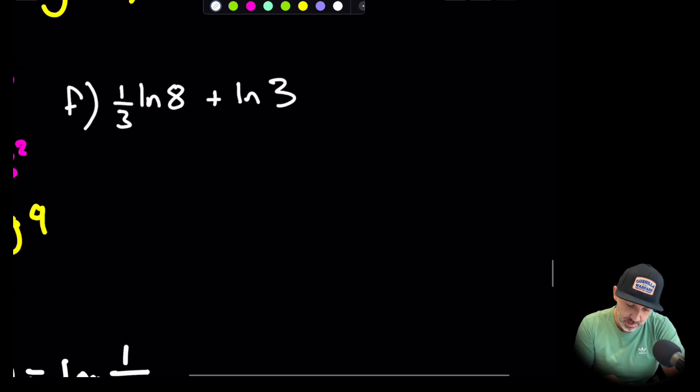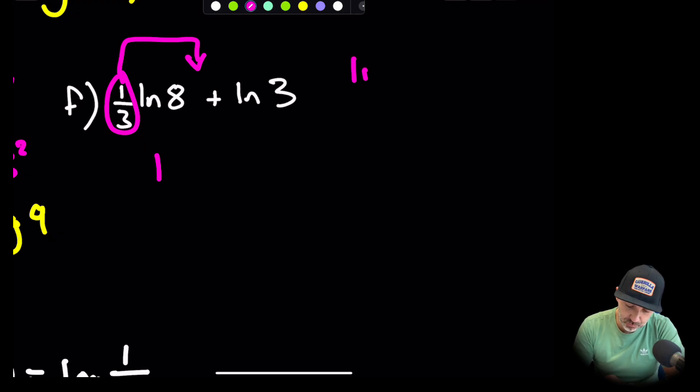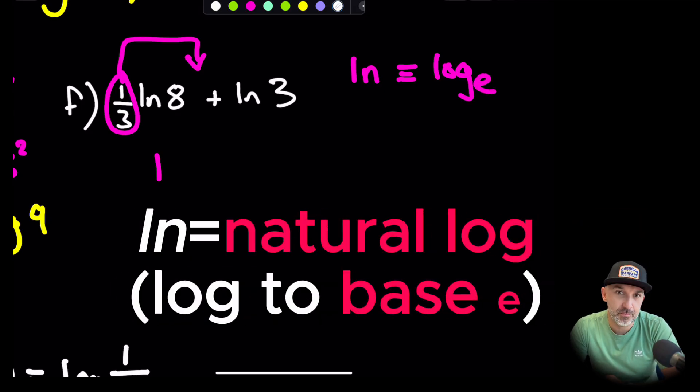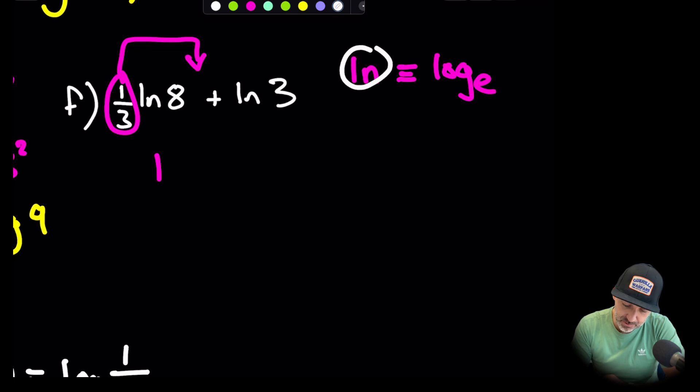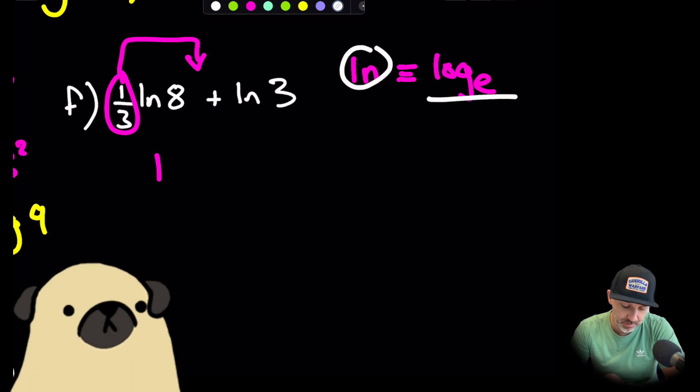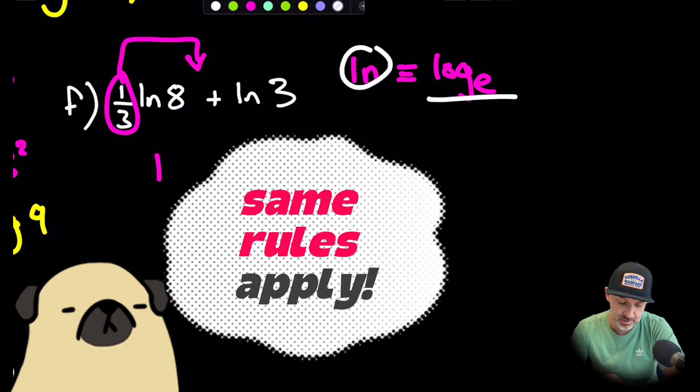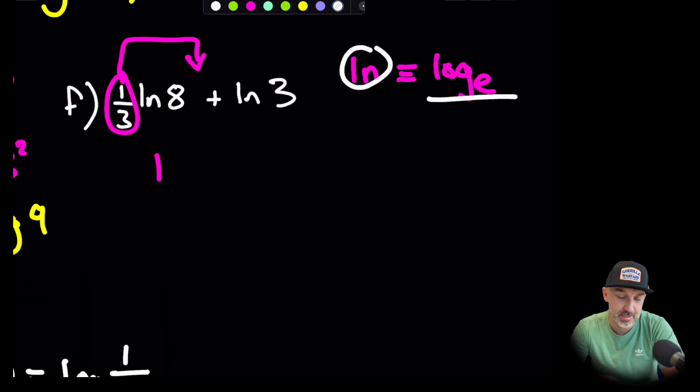Over to this one here, we're going to bring the power up that we saw on the previous one. By the way, this is natural log, so natural log is exactly the same as saying log to base e. You'll see more of that when I do the other part of the video, part 2. But natural log is log to base e, and all the rules are exactly the same for natural log as they are for log to base 10. There's no change.